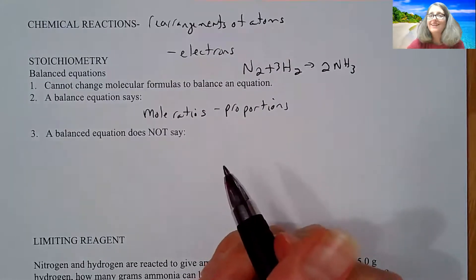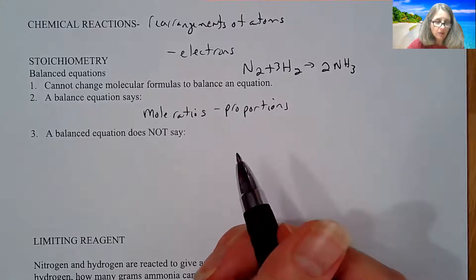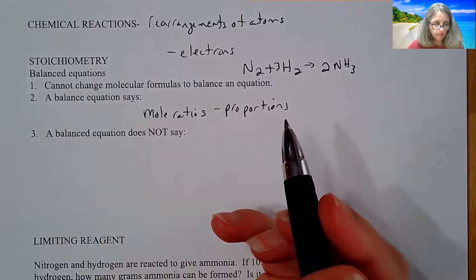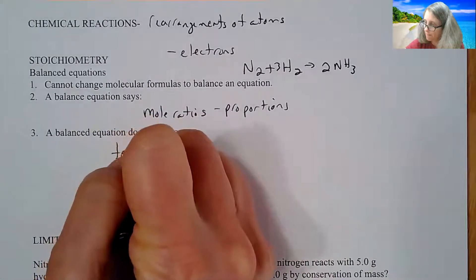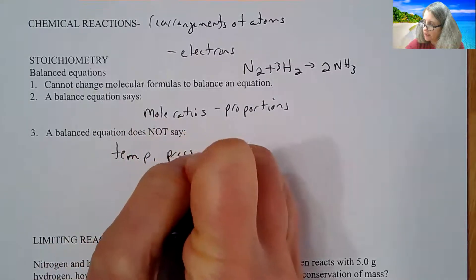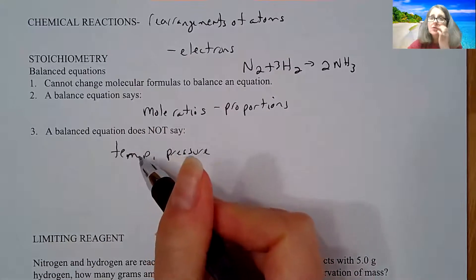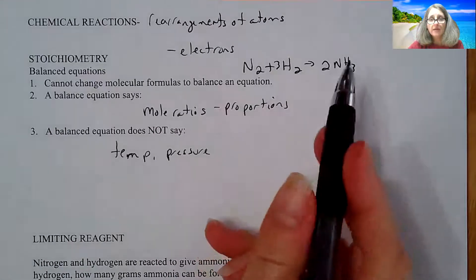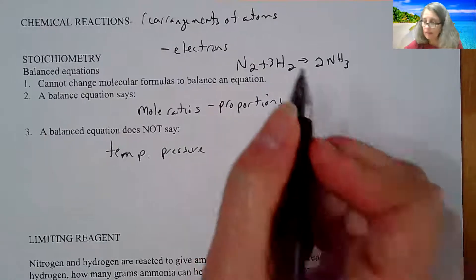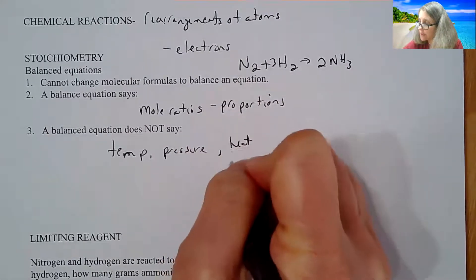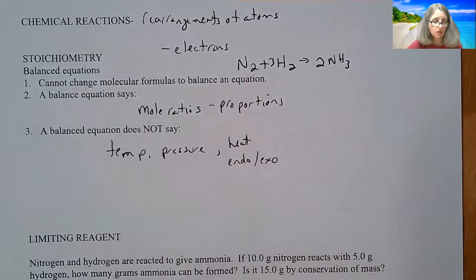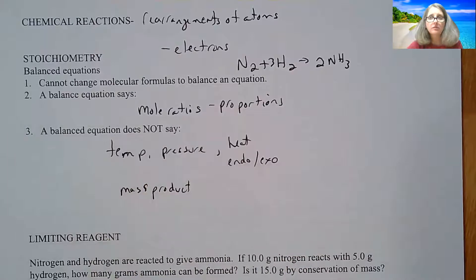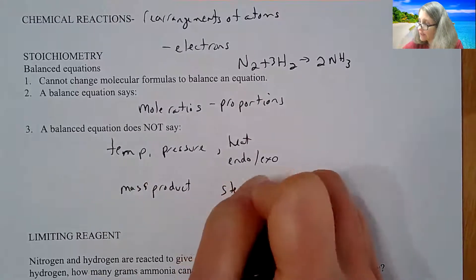But what does a balanced equation not give us? Pause the video and see if you could come up with some things that a balanced equation doesn't give us about a chemical reaction. So a couple things that a balanced reaction doesn't tell us is what temperature should it be at? Should there be a particular pressure, especially since these all happen to be gases? Do I need to be at a certain pressure in order for this to work correctly? Things like heat. So is this an endothermic process or an exothermic process? A balanced equation doesn't tell me that. How much product will I actually make?